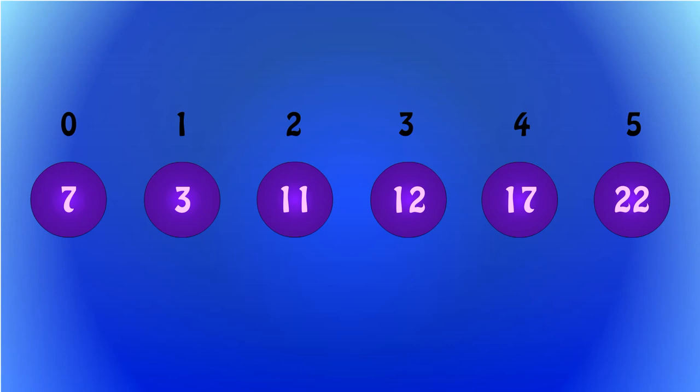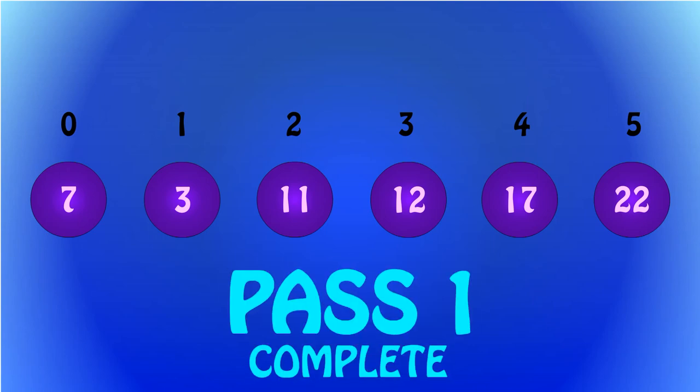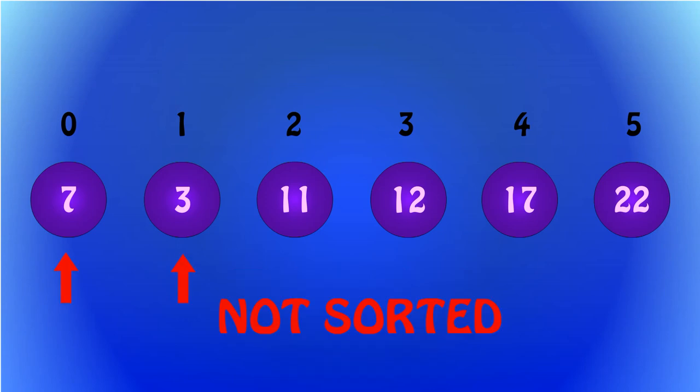The CPU, or bubble, has now gone through all the indices in the array. But there's a problem. The list still isn't sorted in ascending order. That's because the CPU hasn't finished its work yet.